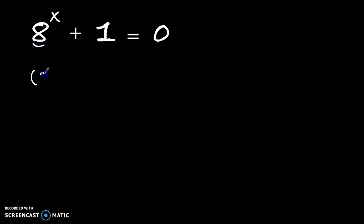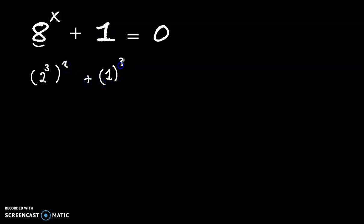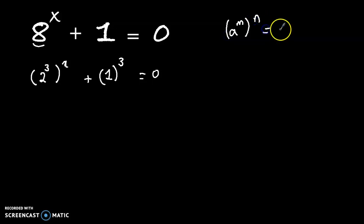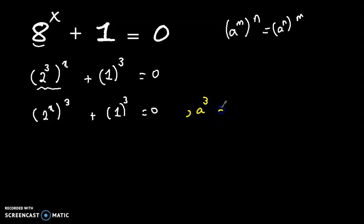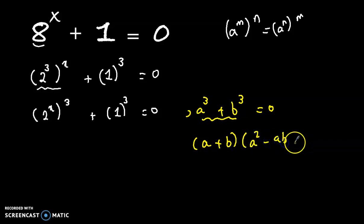Now, 2 to the power x plus 1 cubed equal to 0. Since a to the power m to the power n equals a to the power n to the power m, we can write it as 2 to the power x, cubed, plus 1 cubed, equal to 0. So now we have the form a cubed plus b cubed equal to 0. And a cubed plus b cubed equals a plus b times a squared minus ab plus b squared, where a equals 2 to the power x and b equals 1.